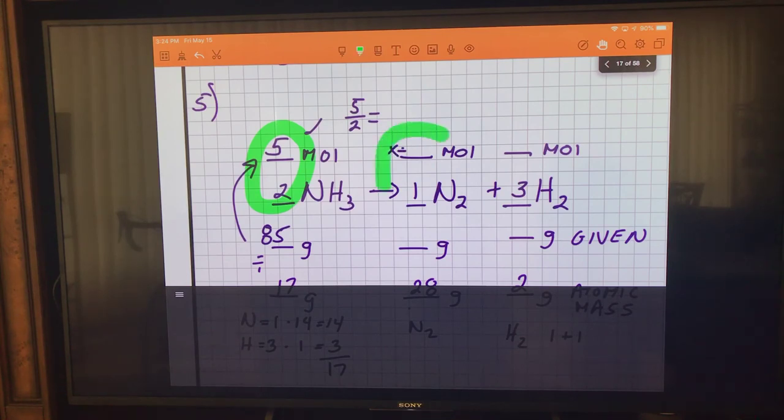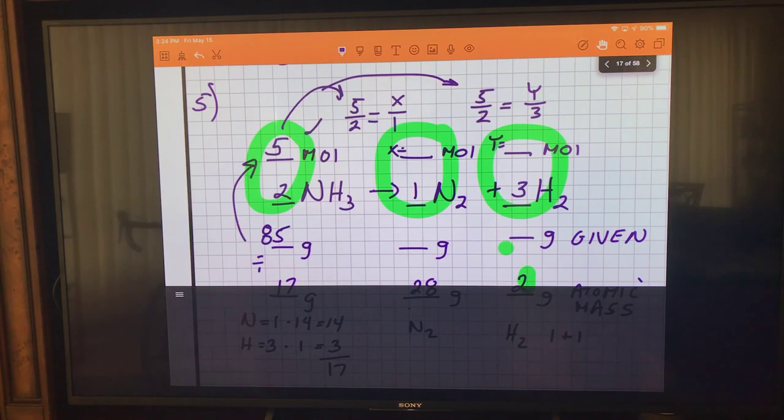And this one right there: x over 1. Get that one there, x over 1. And on this side, 5 over 2. Notice we use this ratio for both of them. This is y, and so that right there, y over 3, y over 3. And when we do that cross multiplication, we're going to get 2.5 and 7.5.